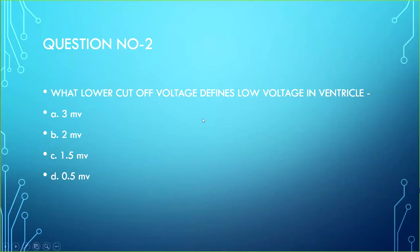Poll question 2: What lower cutoff voltage defines low voltage in the ventricle? The correct answer is less than 1.5 mV. In the atrium the cutoff is less than 0.5 mV, and in the ventricle it is less than 1.5 mV.